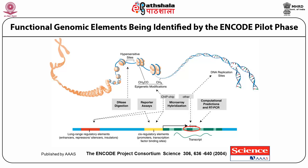The gene encodes protein and has long regulatory elements, including cis-regulatory elements such as the promoter for transcription, which is always located at the 5' site of the gene. The gene produces a transcript which is further converted into protein by translation. This is the basic concept of functional genomics — how the process goes from gene to protein.